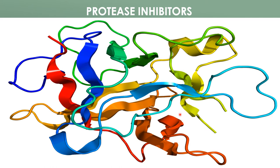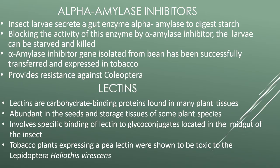Serine and cysteine protease inhibitors inhibit mainly Lepidoptera and Coleoptera. The most active inhibitor identified is the cowpea trypsin inhibitor, which has been transferred into at least 10 other plant species. It is an active anti-metabolite agent against a range of field to storage pests. Serine protease inhibitors result in up to 100% mortality of first-instar cotton leaf worm when expressed in tobacco.